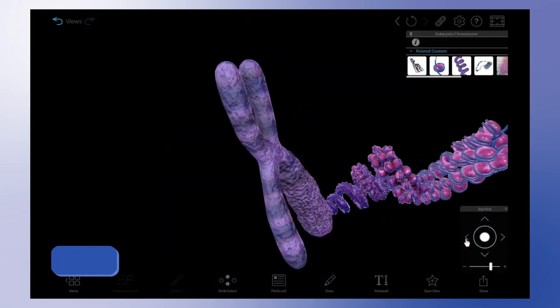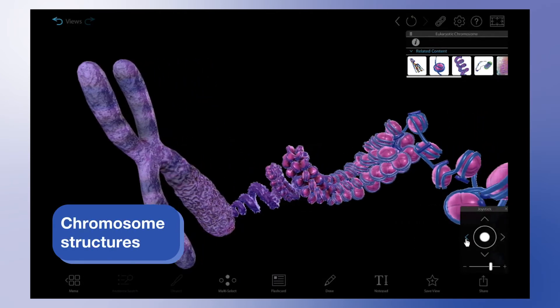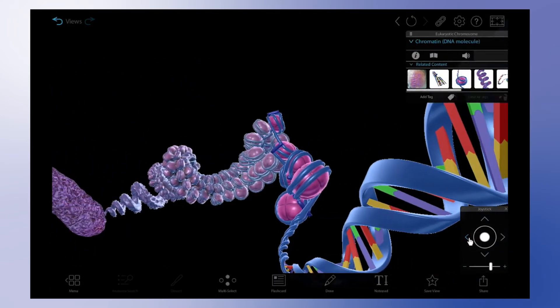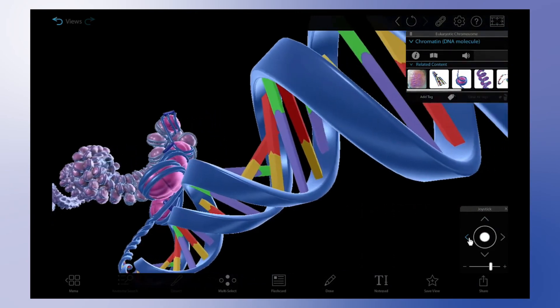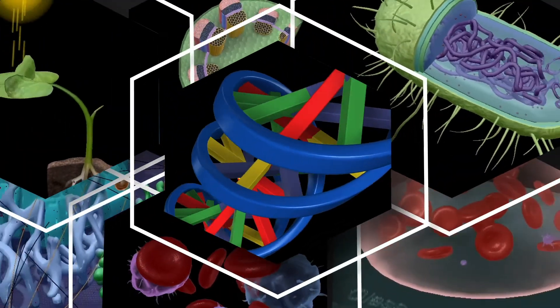Bring it all together with the eukaryotic chromosome model, which shows the structure of the chromosome itself and unravels the chromatin fiber to illustrate each of the stages from the other models.